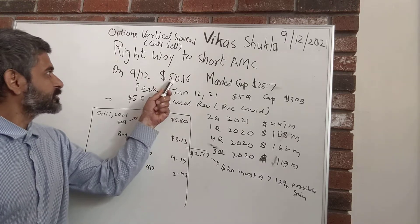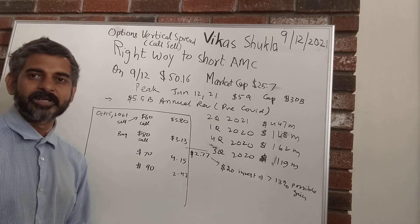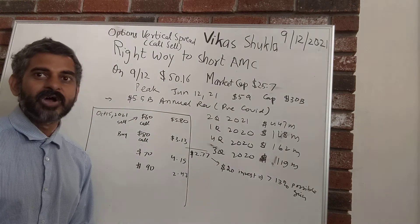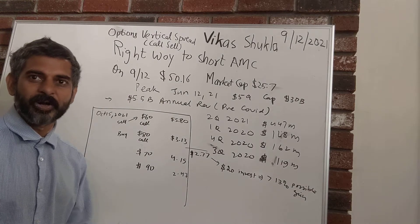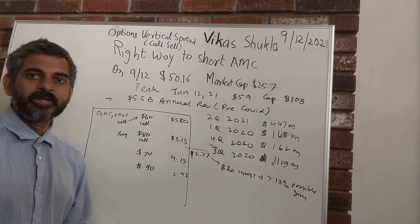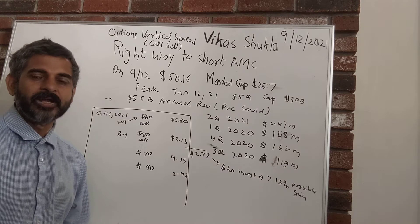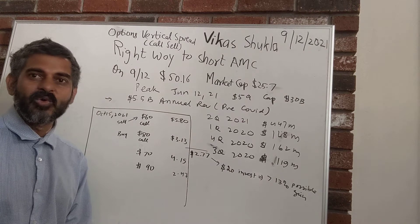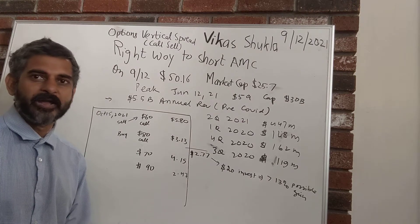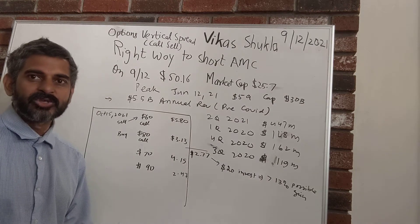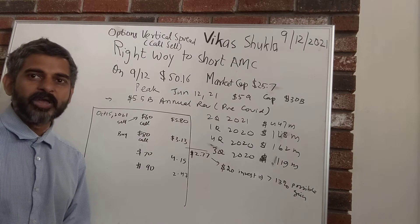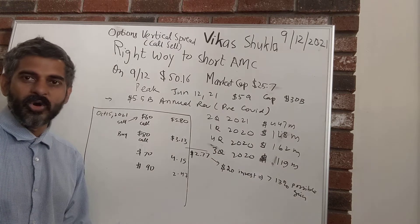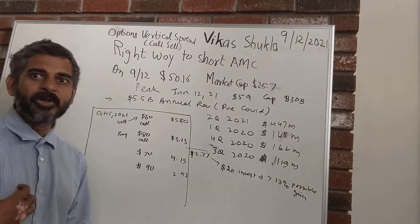For example, let's say the stock is currently at $50.16. If you short it, there is no guarantee you won't lose a huge amount of money. It's a meme stock, and if that community comes together, the stock can go very high — maybe $80 or $90 — and you can theoretically lose a huge amount of money.